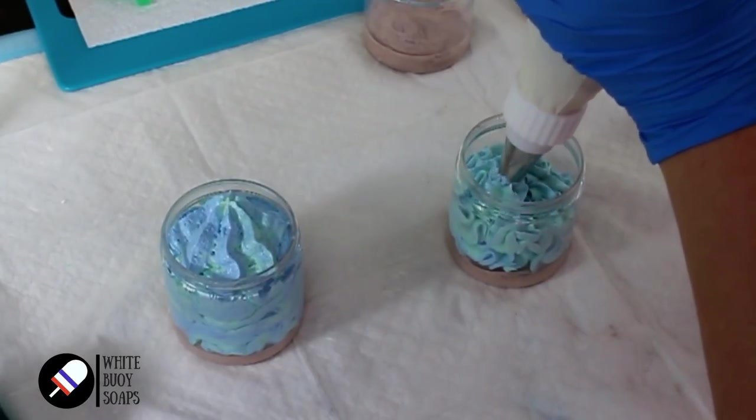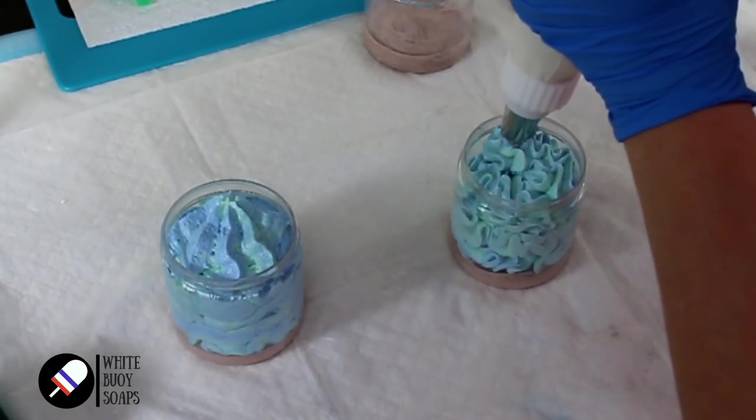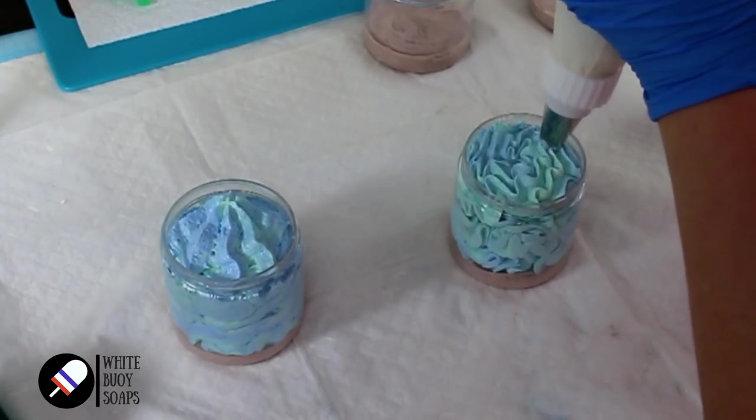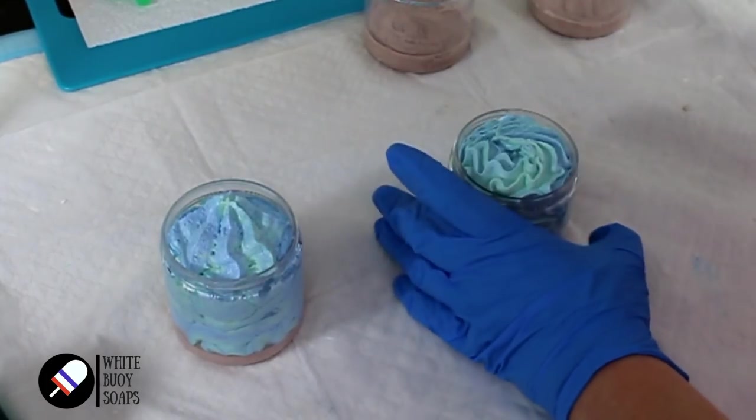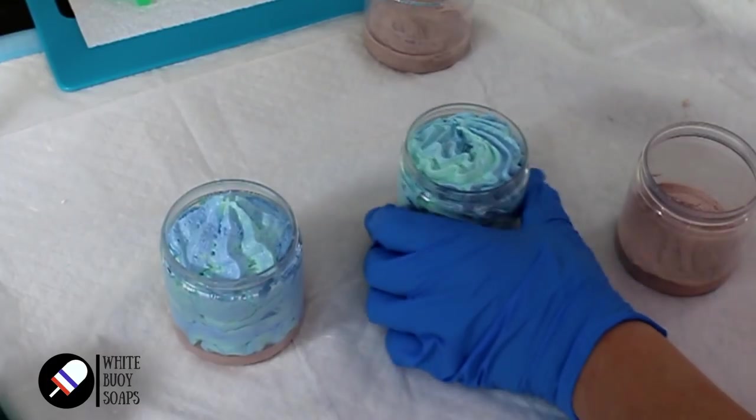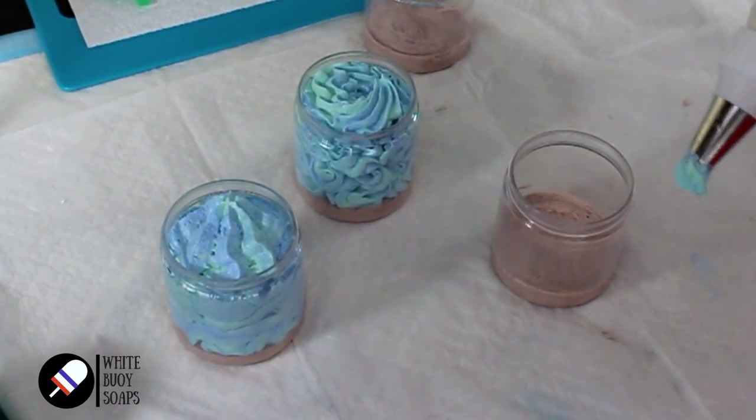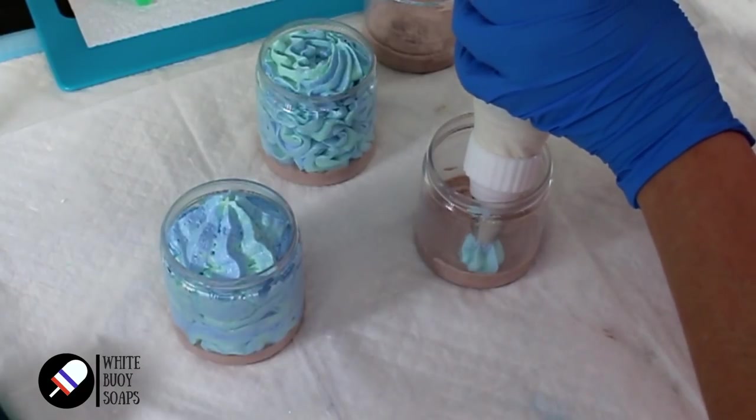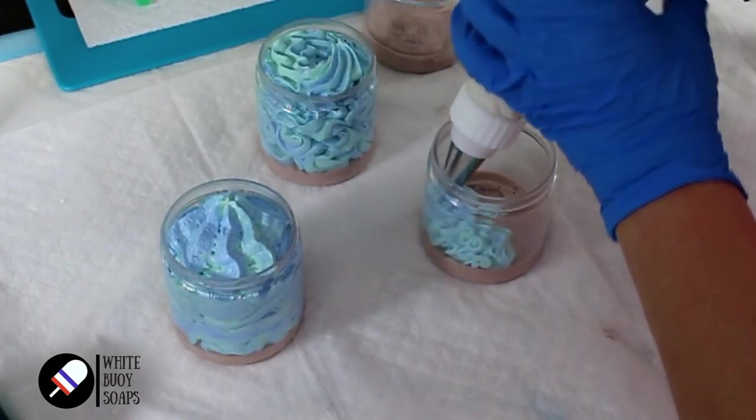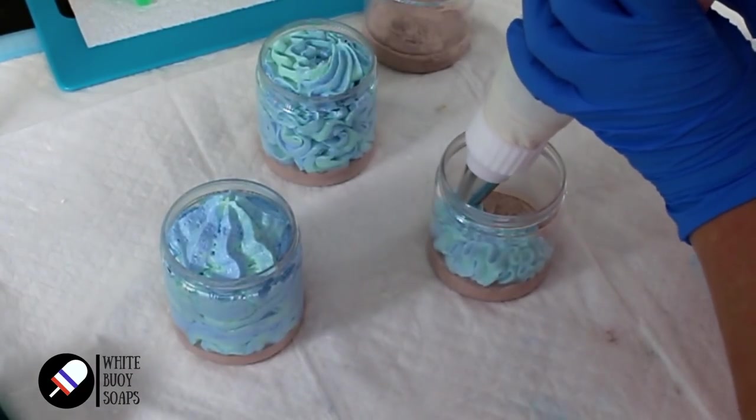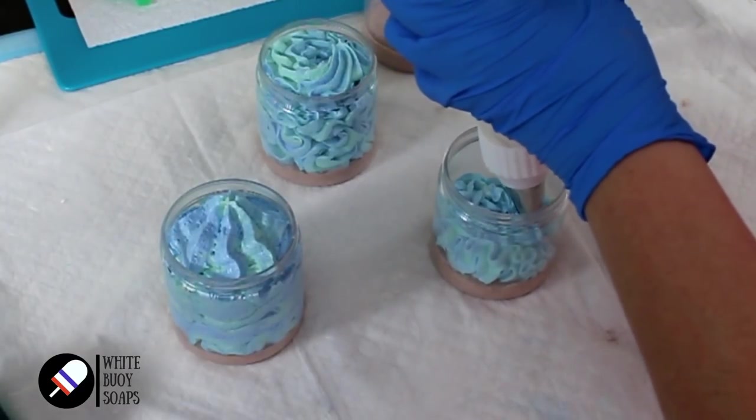Just moving it back and forth just to make it look like waves. That one's way better than the other one. That one looks so cool. Move the piping bag, kind of wiggle it back and forth.